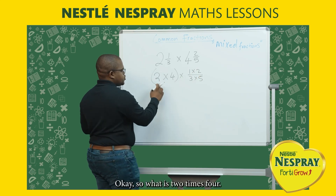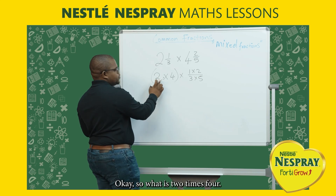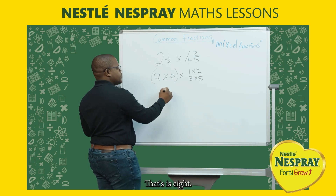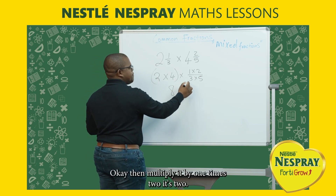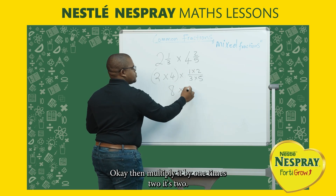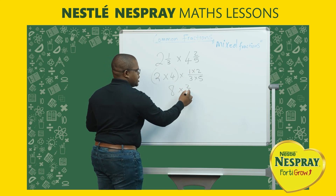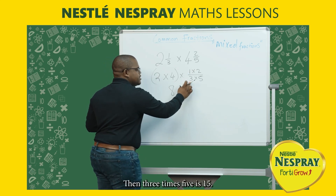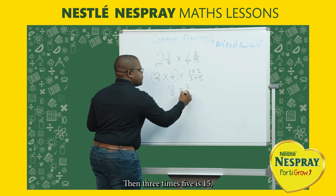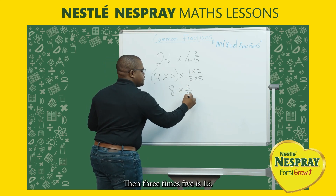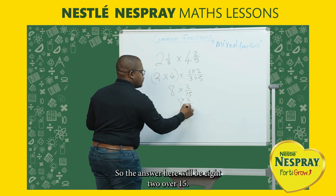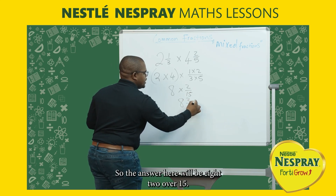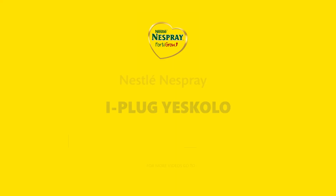So what is 2 times 4? That is 8. Then multiply by 1 times 2, it's 2. Then 3 times 5 is 15. So the answer here will be 8 and 2 over 15. This is our answer.